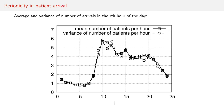Here you see the average and the variance of the number of arrivals in each hour of the day. This is the pattern that occurs each and every day at the hospital. You can see that during the night there are few arrivals, and the highest intensity is between 9 am and 12 am.